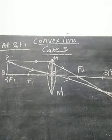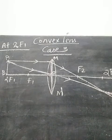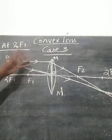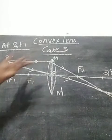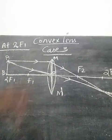Now we are going to find the position, nature, and size of the image formed by the convex lens in this case. We usually consider two rays coming from the top of the object.